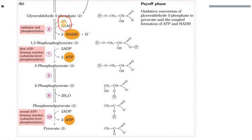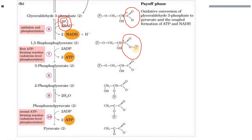Unlike typical phosphorylation which uses ATP as the donor, here inorganic phosphate serves as the phosphate donor. The aldehyde group present is oxidized and the hydrogen is replaced by a phosphate group, resulting in the formation of 1,3-bisphosphoglycerate, where phosphorylation takes place at the first position.